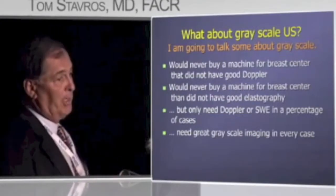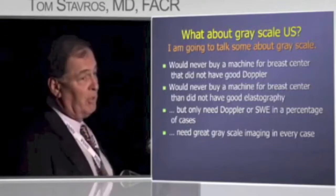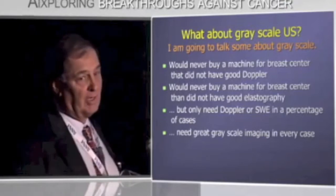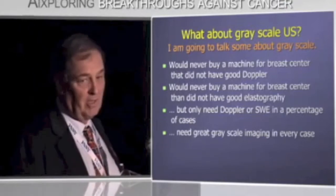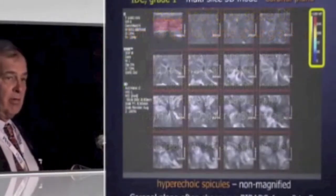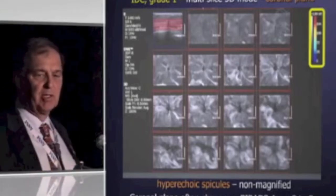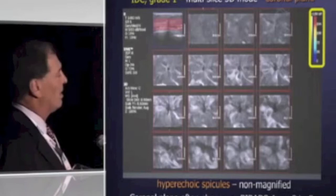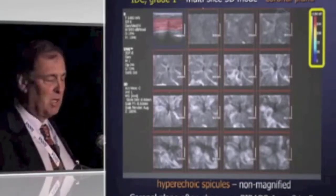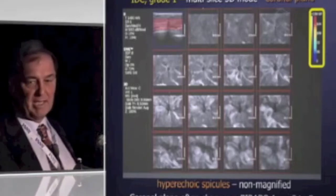I said I would never buy a machine just because it had good elastography or good color Doppler — I'm only going to use that in a percentage of cases, but I need great grayscale in every case. So even though this is about shear wave, I'm going to talk about the grayscale capabilities of the machine. This is multi-slice coronal images from a small stellate lesion, and what I want you to notice is the hyperechoic elements, the hyperechoic spicules extending into the surrounding tissues. If you magnify this, you're going to see the hypoechoic elements because spicules are alternating hypoechoic and hyperechoic, but you've got to magnify to see those.